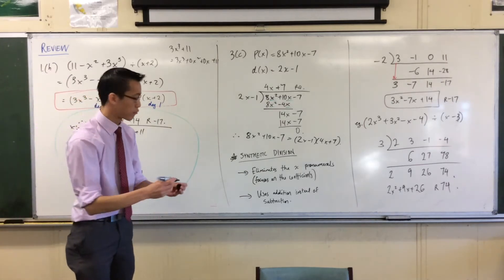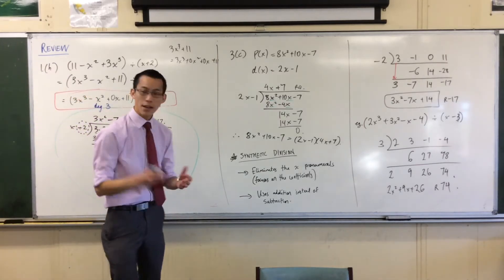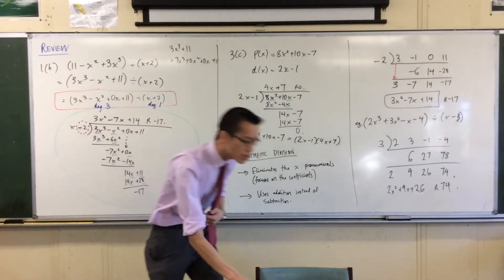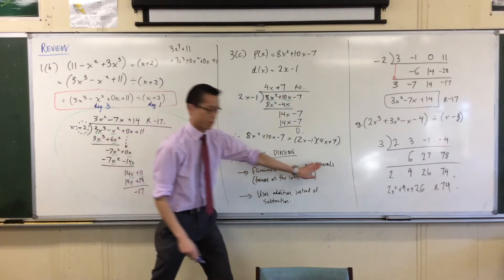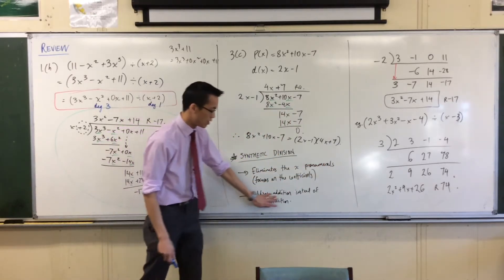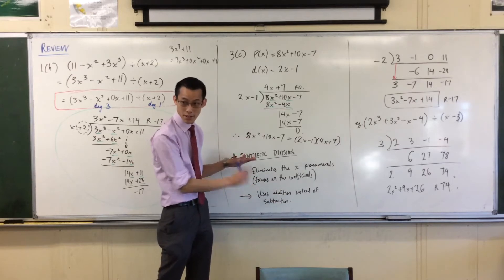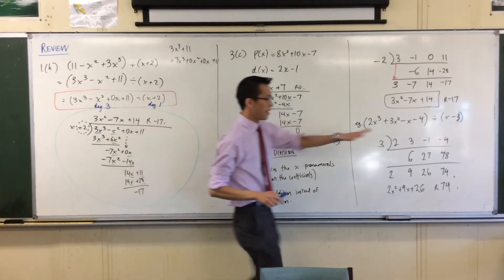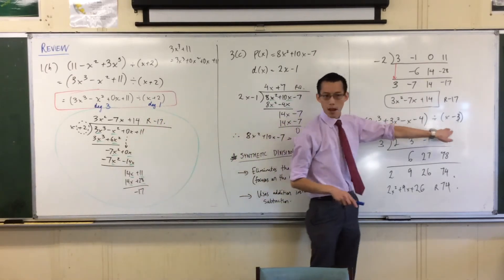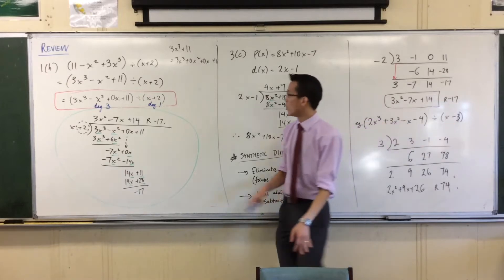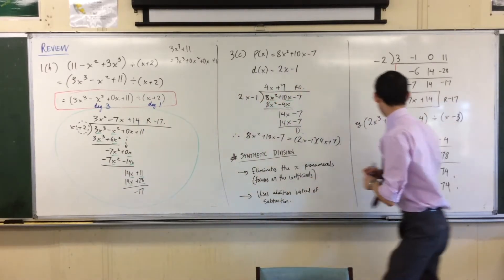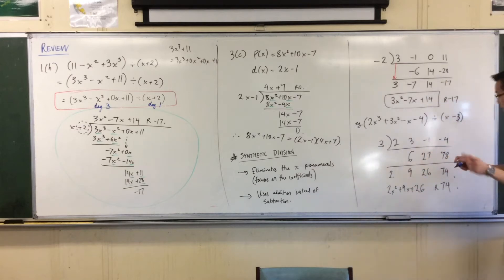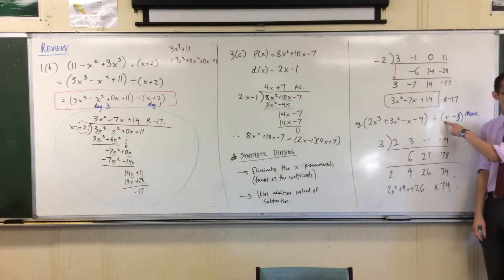Just to close off, because everyone asked a great question — what this method does is it focuses on a particular kind of question. It eliminates the X-protein rules, it uses addition instead of subtraction. Those are all advantages, but what it focuses on is divisors like X-3 or X-plus-2. We have fancy names for this: they're monic, because that leading coefficient is one.